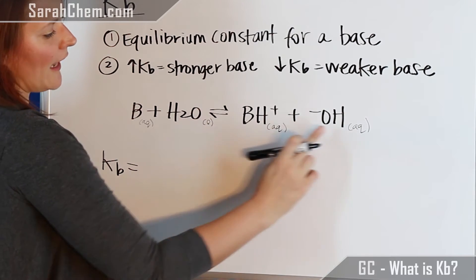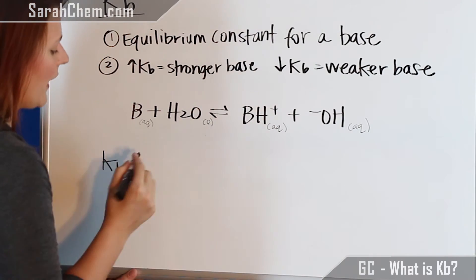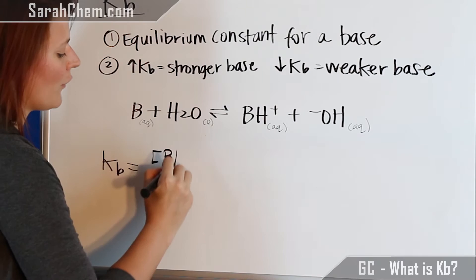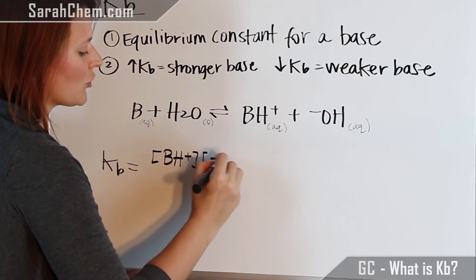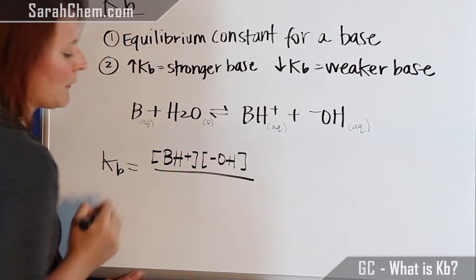we see that our products are our conjugate acid and hydroxide. So we have the concentration of BH plus times the concentration of hydroxide divided by.